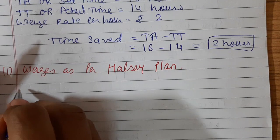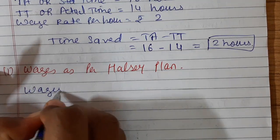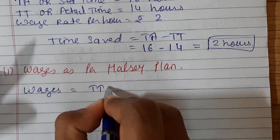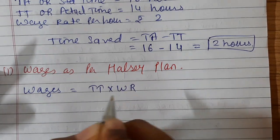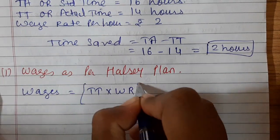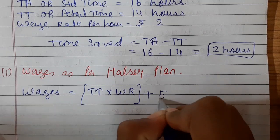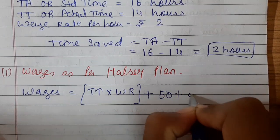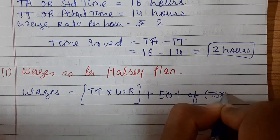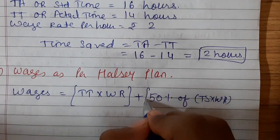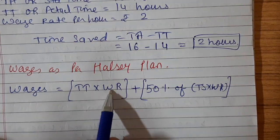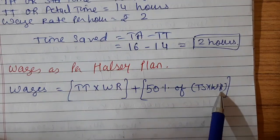Let us write down the formula first. Wages equals time taken into wage rate — this is the minimum wage — plus bonus, which is 50% of time saved into wage rate.